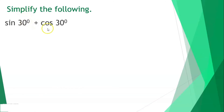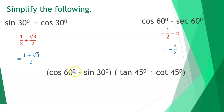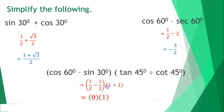Evaluating expressions using special angles: sine 30° + cosine 30° = 1/2 + √3/2 = (1 + √3)/2. Cosine 60° − secant 60° = 1/2 − 2 = −3/2. Cosine 60° − sine 30° multiplied by (tangent 45°/cotangent 45°) = (1/2 − 1/2) × (1/1) = 0 × 1 = 0.